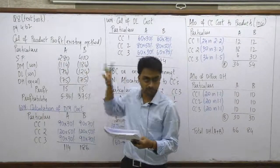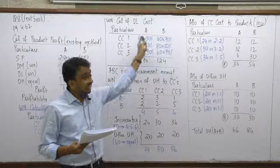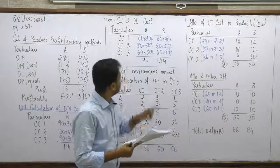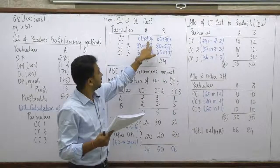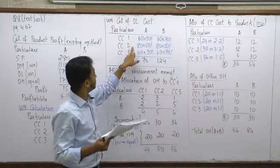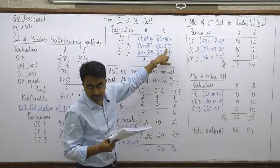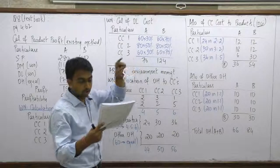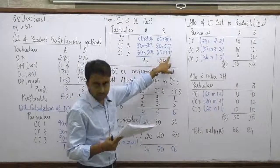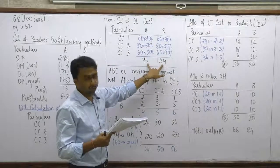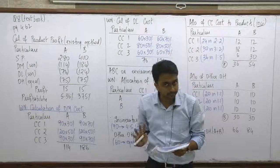For direct labor, the method is exactly the same. Cost Center 1 DL cost is ₹60, allocated 30%/70%; Cost Center 2 DL cost is ₹80, allocated 50%/50%; Cost Center 3 DL cost is ₹60, allocated 30%/70%. Adding up: Grade A's total direct labor is ₹76 and Grade B's is ₹124, totaling ₹200 — the total DL cost for the company.